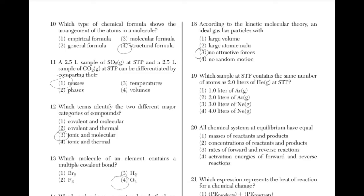Which sample at STP contains the same number of atoms as 2 liters of He at STP? The answer is 2, because there will be 2 liters of argon, which is the same volume as 2 liters of helium in the question.